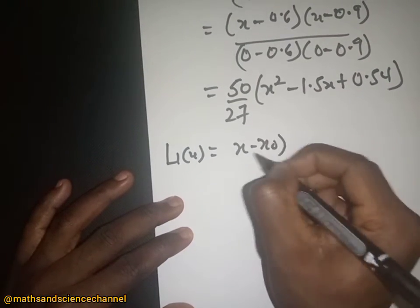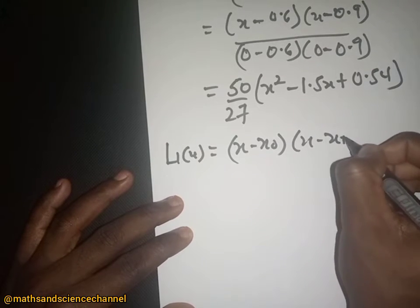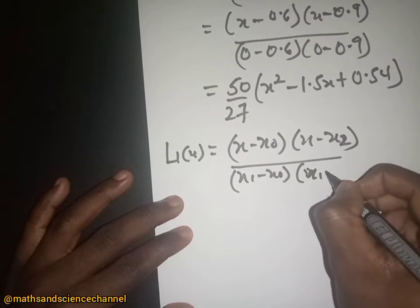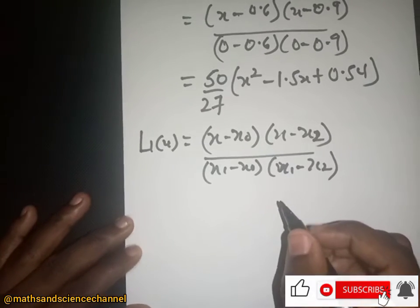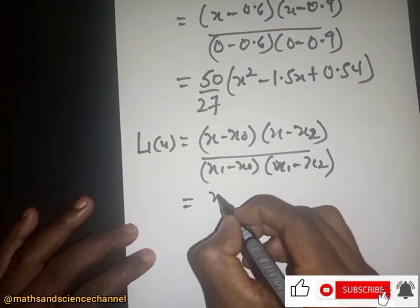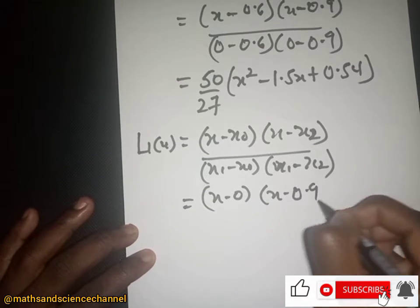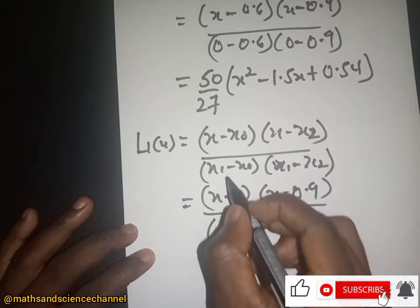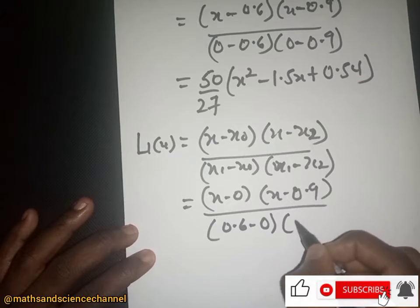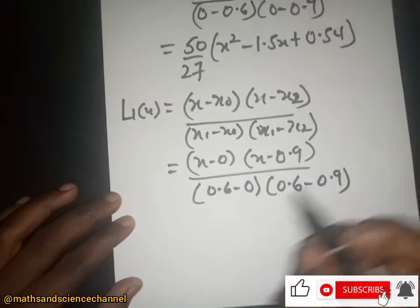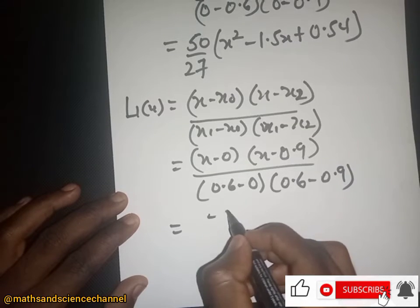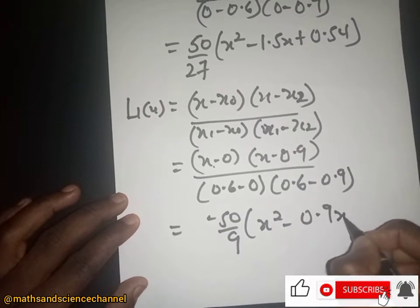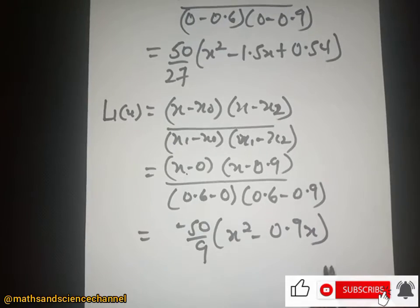For L₁(x), the formula is: L₁(x) = (x − s₀)(x − s₂) / [(s₁ − s₀)(s₁ − s₂)]. Substituting s₀ = 0, s₂ = 0.9, s₁ = 0.6: denominator is (0.6 − 0)(0.6 − 0.9). Computing gives a coefficient of −50/9, and expanding gives x² − 0.9x. So L₁(x) = (−50/9)(x² − 0.9x).